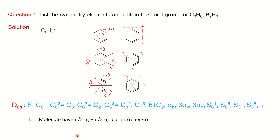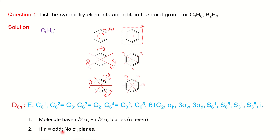One important note: if N is odd, there won't be any σD planes. You write only σV planes. For example, if it is C5 like in cyclopentadiene with D5 symmetry, there will be 5 σV planes.